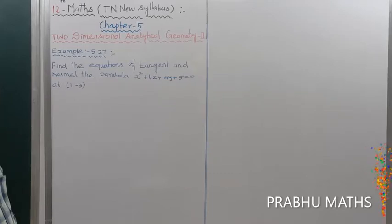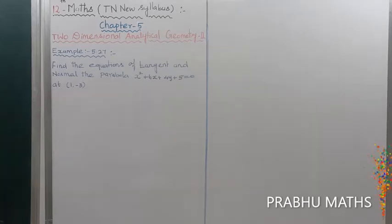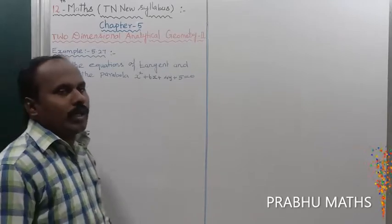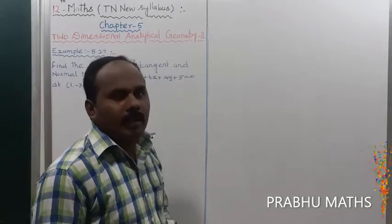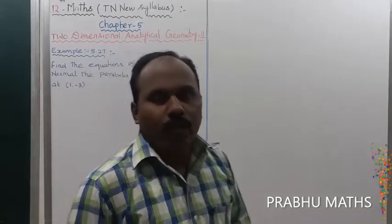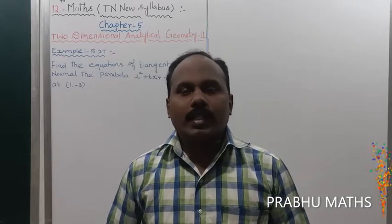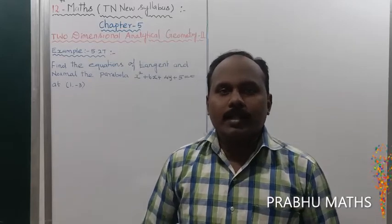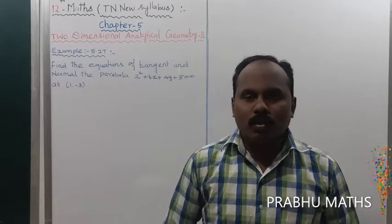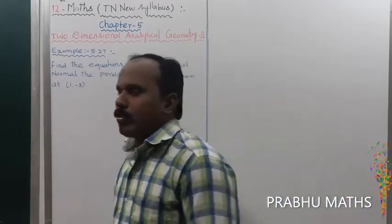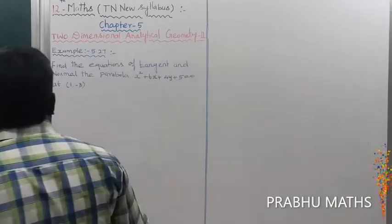First, find the tangent; next, find the normal. For the tangent formula: x² is replaced by x·x₁, y² is replaced by y·y₁, x is replaced by (x + x₁)/2, and y is replaced by (y + y₁)/2. That is the parabola tangent substitution rule.